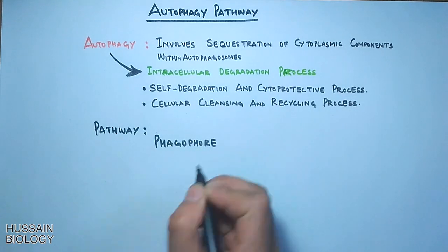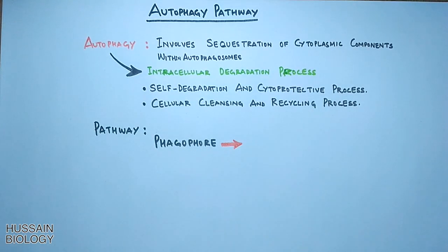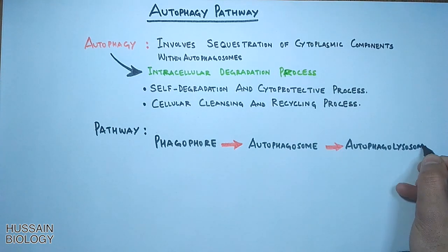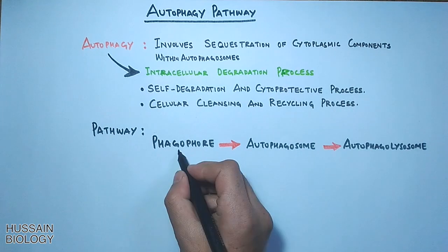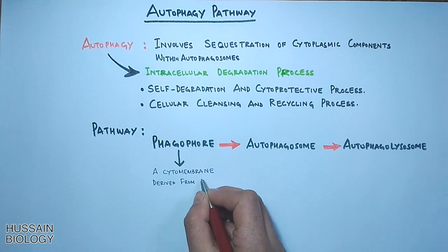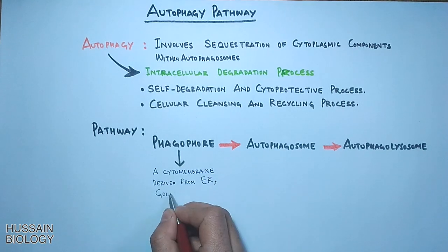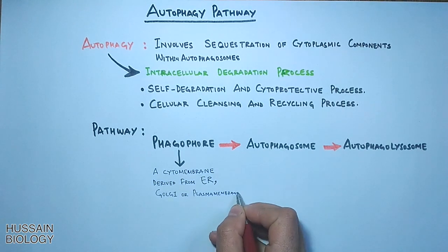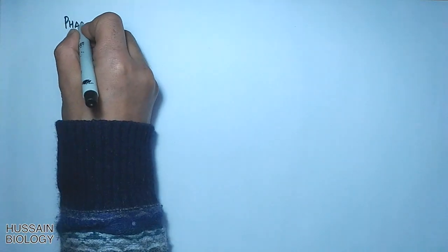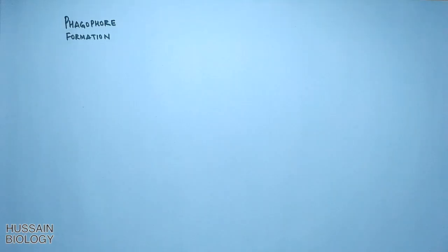In the autophagy pathway, first there is a formation of the phagophore, followed by the autophagosome, and then the autophagolysosome. The phagophore is actually a cytomembrane which is derived from the endoplasmic reticulum, Golgi, or plasma membrane.